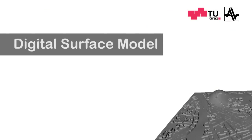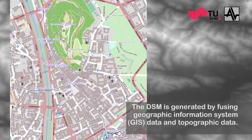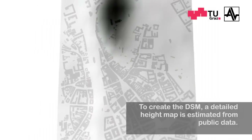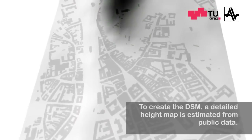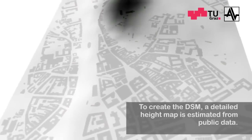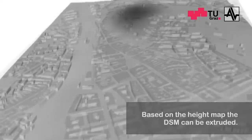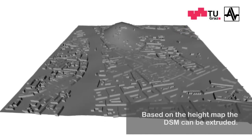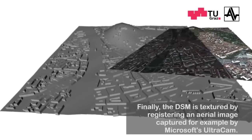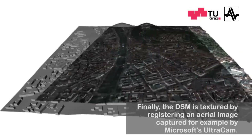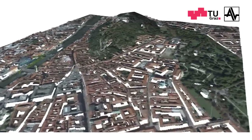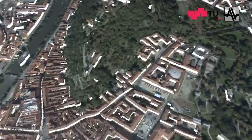A Digital Surface Model (DSM) helps to set 3D models into context and can be estimated by using publicly available GIS data and geospatial information sources. We use terrain elevation data of the NASA Shuttle Radar Topography Mission (SRTM) to generate a Digital Terrain Model (DTM). Together with map data obtained from OpenStreetMaps for extruding buildings, we approximate a digital surface model by assuming a fixed building height.